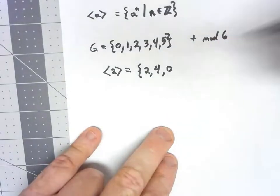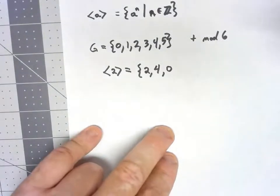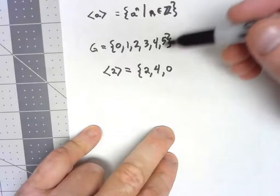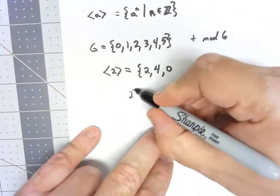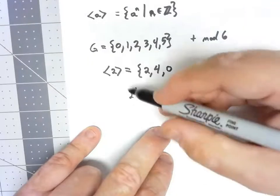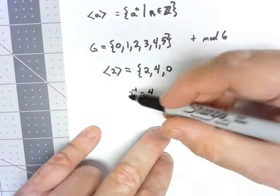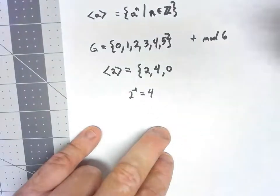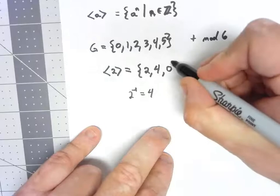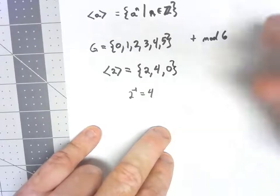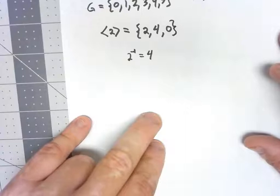2 to the 0 power is 0, which is already in there because 0 is the identity. What about negative powers? 2 to the negative first is the same as the inverse of 2, which is 4, because 2 plus 4 gives us 0. Those three elements — {0, 2, 4} — are the only things that can be generated no matter what integer power of 2 you use.